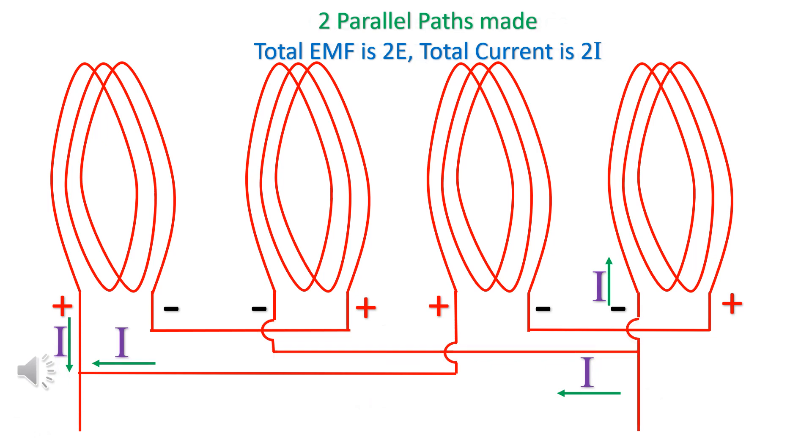Two parallel paths are made. Total EMF is 2E. Total current is 2I.